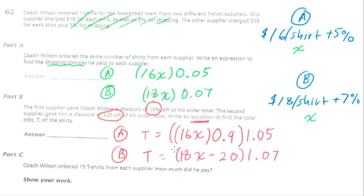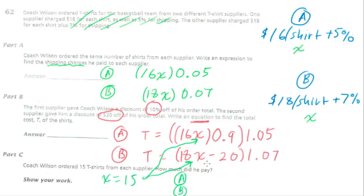Part C: if Coach Wilson ordered 15 t-shirts from each supplier, how much did he pay? We substitute X = 15 into each equation. For A: 16 × 15 × 0.9 × 1.05, which gives $226.80. For B: (18 × 15 − 20) × 1.07, which gives $267.50.